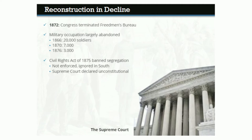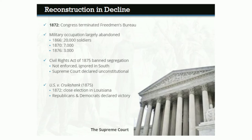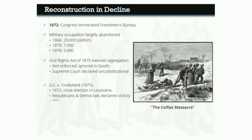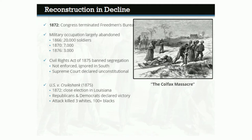Other Supreme Court decisions weakened the federal government's ability to enforce the 14th and 15th Amendments. One important example is United States v. Cruikshank, decided in 1875. In Louisiana, a very close state election in 1872 led both Republicans and Democrats to declare victory. Violence followed, and a militia of white Democrats attacked an armed group of black Republicans defending a courthouse. Three white men and more than 100 black men were killed in what became the Colfax Massacre, with many executed after surrendering.